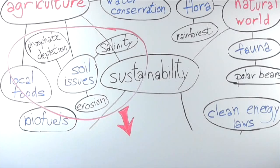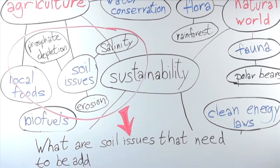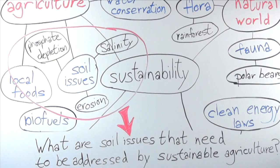In our current concept map, soil issues in sustainable agriculture has come to the forefront. These subtopics and examples can form the basis for your research question. As we've shown here, with the example of What are soil issues that need to be addressed by sustainable agriculture?